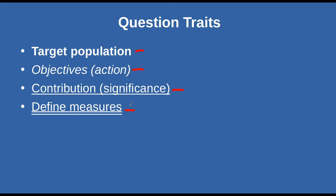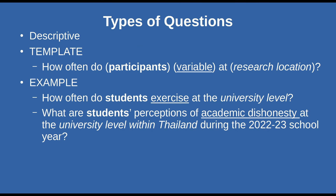Now we're going to move into the three different types of questions that you're commonly going to see. You can have more than these three types — especially if you get more into data science or machine learning, there could be up to eight different types — but they're broken down into these three basic categories. Our first one is going to be the descriptive question. Descriptive means you're trying to describe something. Here's our template: 'How often do participants [variable] at [location]?'